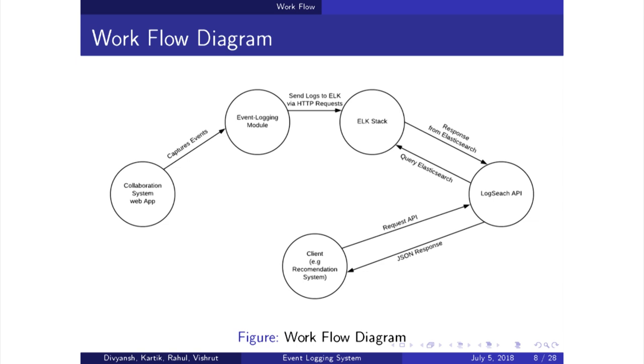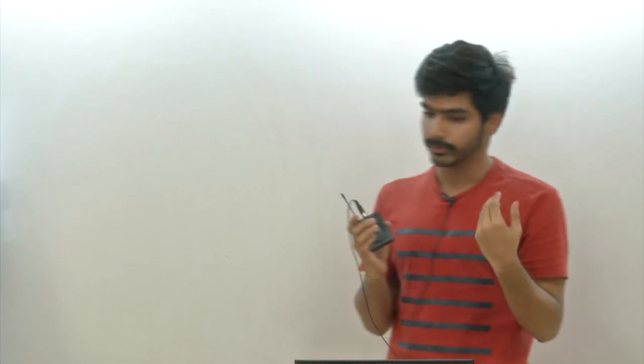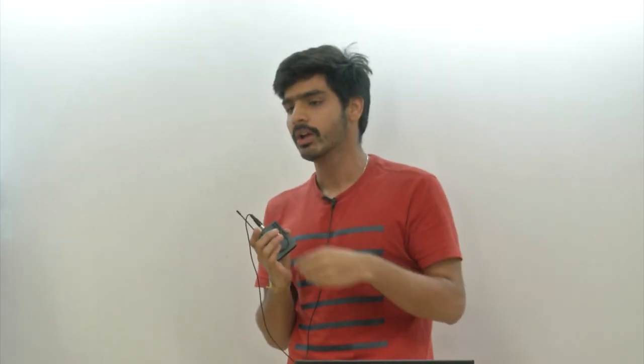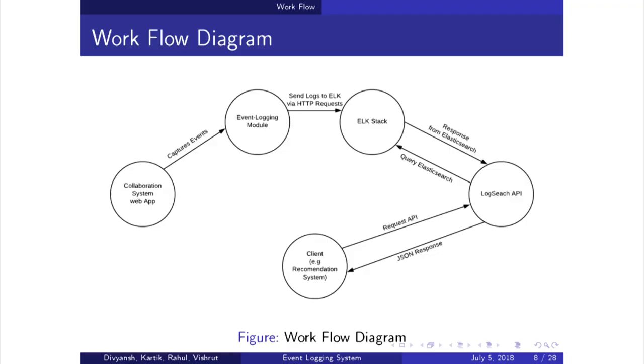In the second part, we develop an API. You call the API and it uses the Elasticsearch built-in API to query Elasticsearch, get the data, process it, and provide it to the user or client — such as the recommendation system or any other user. The third part is the visualization, which is not shown in this diagram.